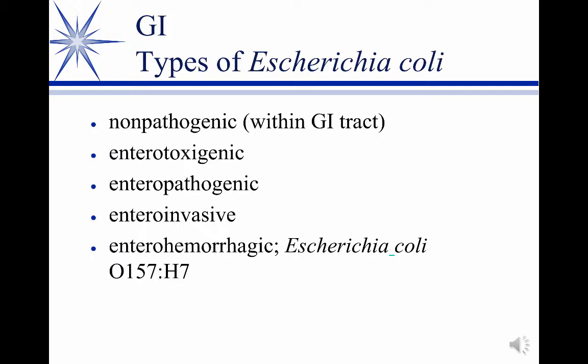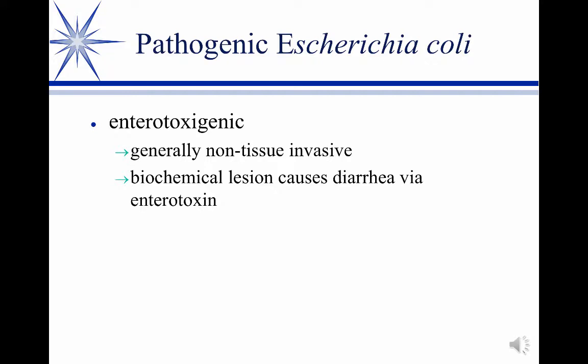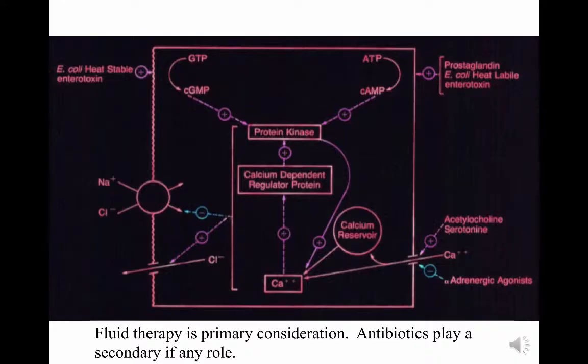E. coli O157:H7 is the one associated with food poisoning and high fatality rates in humans. Probably the most common in calves is the enterotoxigenic. It's generally a non-invasive enteritis — it doesn't actually invade the intestinal lining. Instead, it causes a biochemical lesion and creates a secretory, hyper-secretory diarrhea without any actual intestinal lesions.